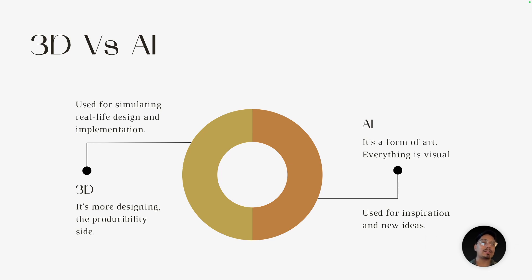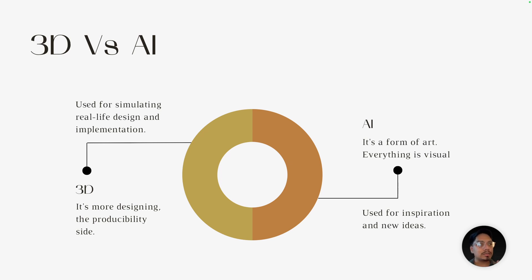Every designer right now needs to adopt 3D with AI into their workflow. Before we move on to the framework, let's quickly see how 3D and AI fashion are different from each other. AI in the fashion space is coming mostly into the design process. For example, we used to create mood boards by going to Google, Pinterest, and all these places. Now you can use AI to generate really interesting images to bring your imagination to life.